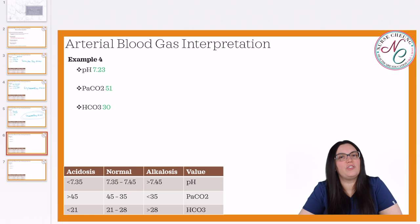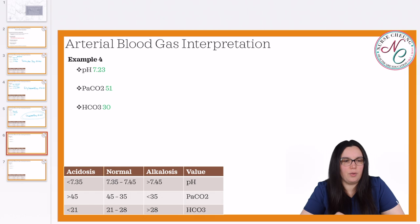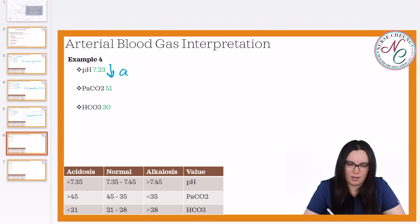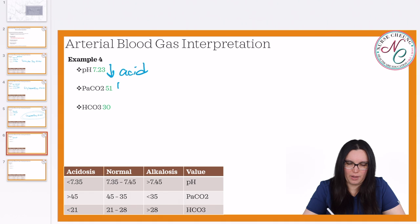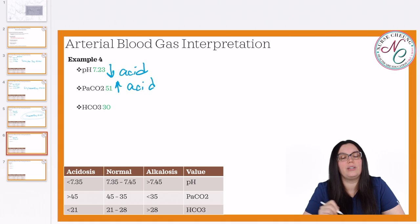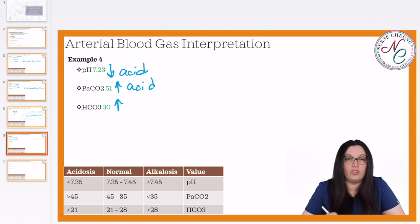Example four: we have a pH of 7.23, a PaCO2 of 51, and a bicarb HCO3 of 30. We always start with our pH — normal 7.35 to 7.45. A pH of 7.23 is low, falling on the acid end of the spectrum. Next, our PaCO2 is 51. Normal is 35 to 45. Greater than 45 means more acidosis in the respiratory system. Lastly, we have the metabolic system. Our bicarb is 30. Normal HCO3 is 21 to 28, so 30 falls greater than 28 — that is going to be an alkalosis.